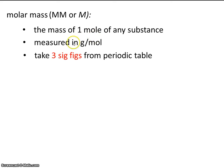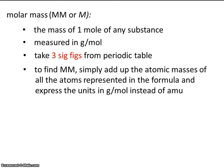In order to do that, we're going to take three significant figures from the periodic table. To find the molar mass, simply add up the atomic masses of all of the atoms represented in the formula, and express the units in grams per mole instead of AMU. You probably remember AMU from a previous chemistry course. It stands for atomic mass units. We're going to express molar mass in grams per mole.